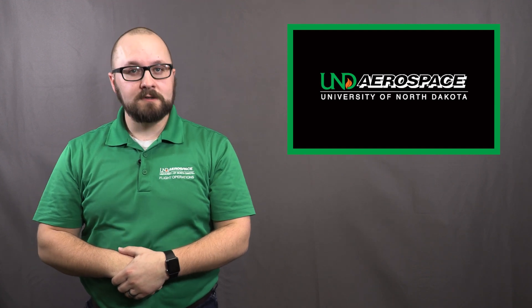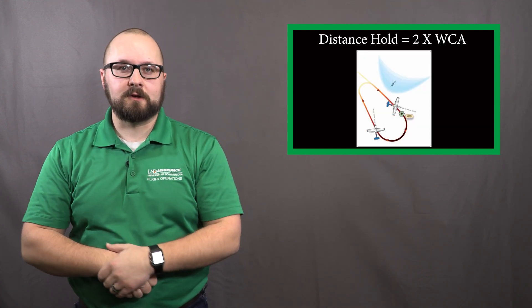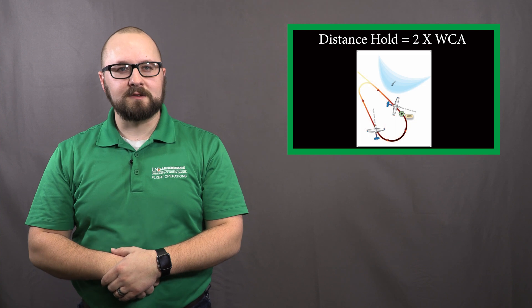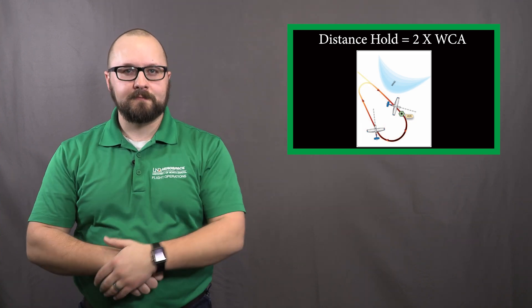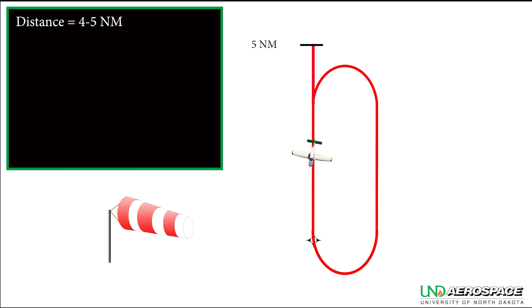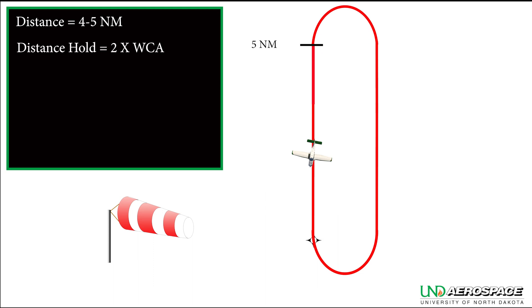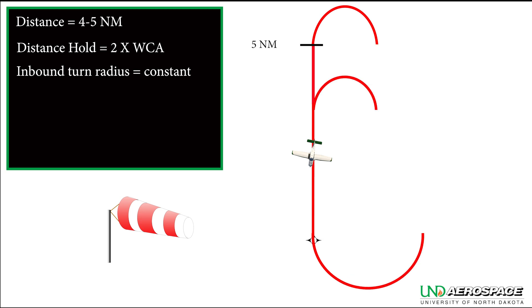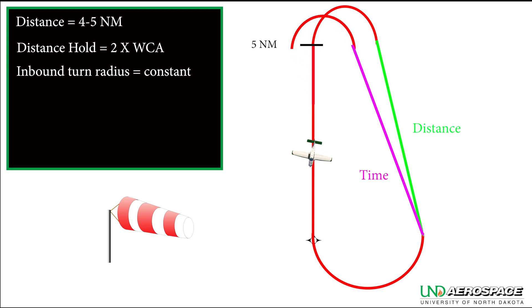If ATC clears you for distance holding, use 2 times the wind correction angle. You may be asking yourself: why is this different? When flying a distance hold, you are typically flying 4 or 5 nautical mile legs. These end up being longer than timed hold outbound legs, so you don't need as much wind correction. Remember, the radius of the inbound turn will not change whether you are flying distance or timed holds. However, if you overcorrect in the distance hold — for example, using 3 times the wind correction — you will overshoot the inbound course.